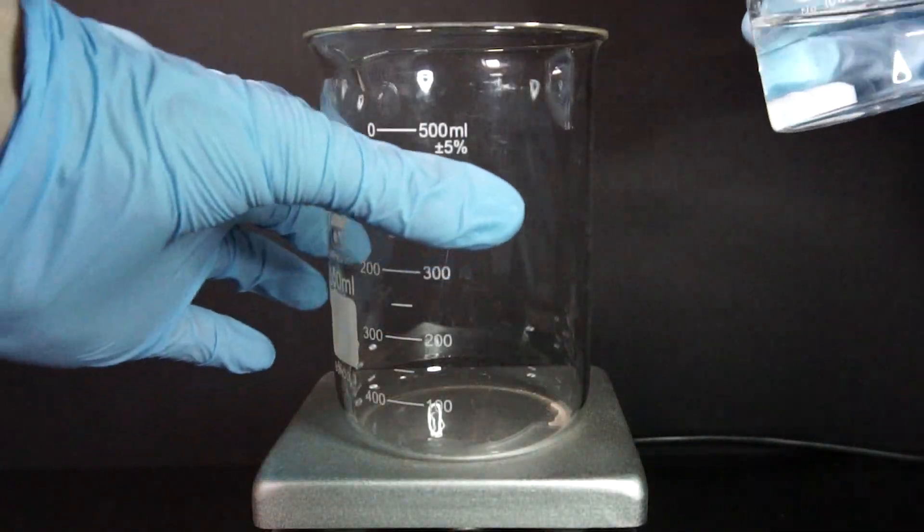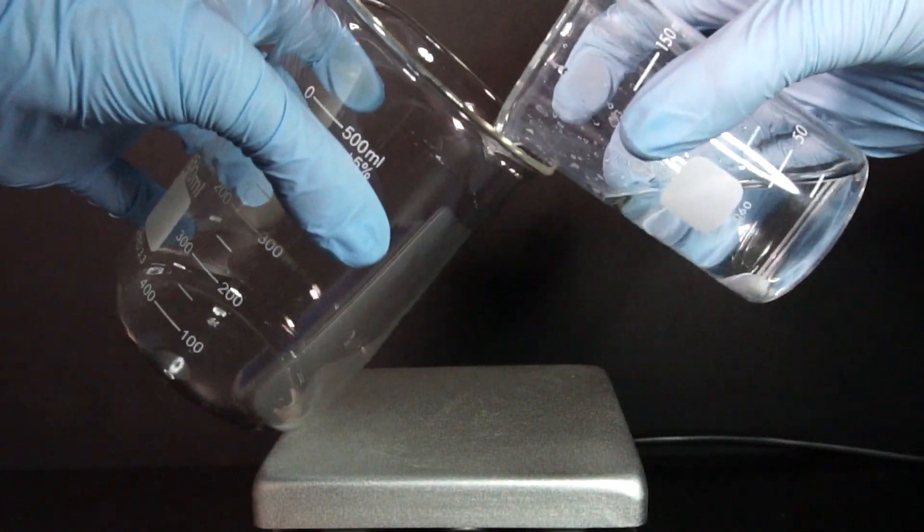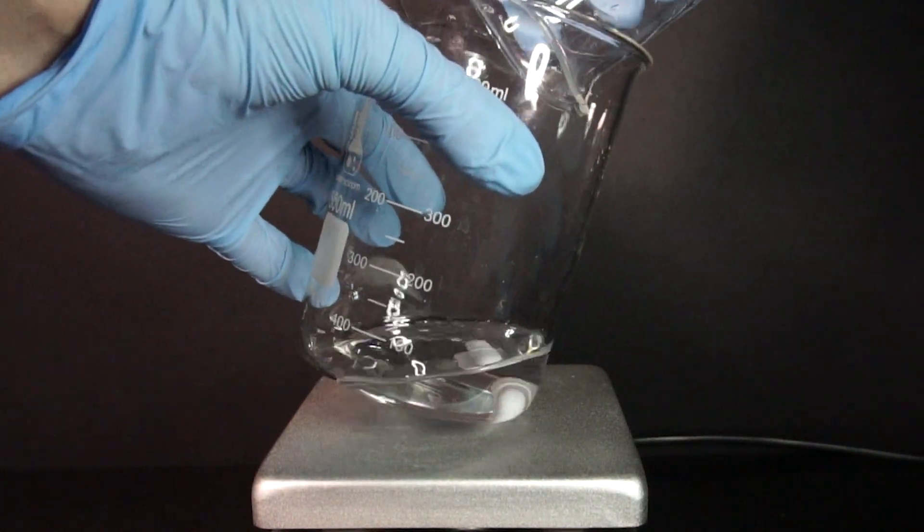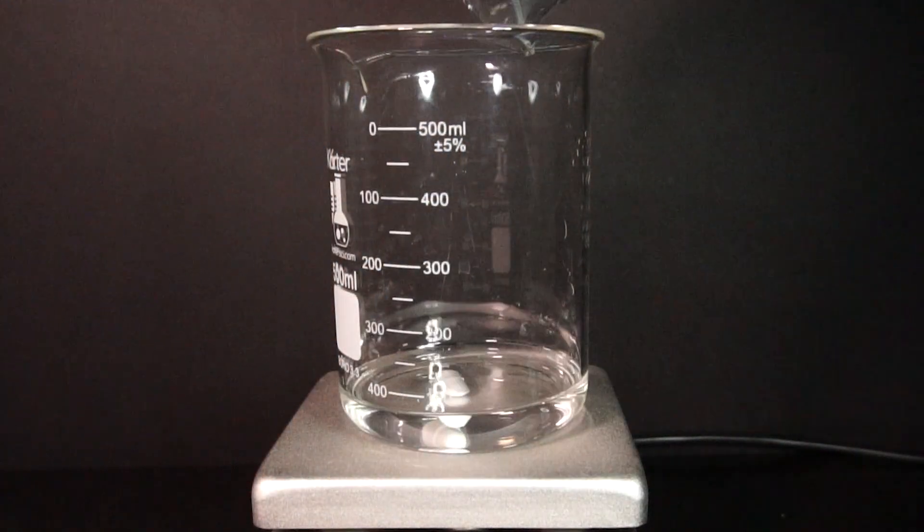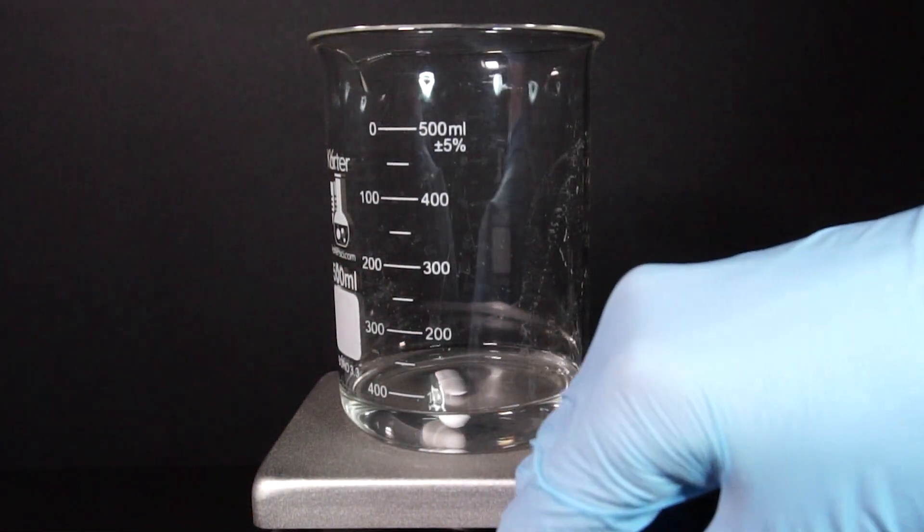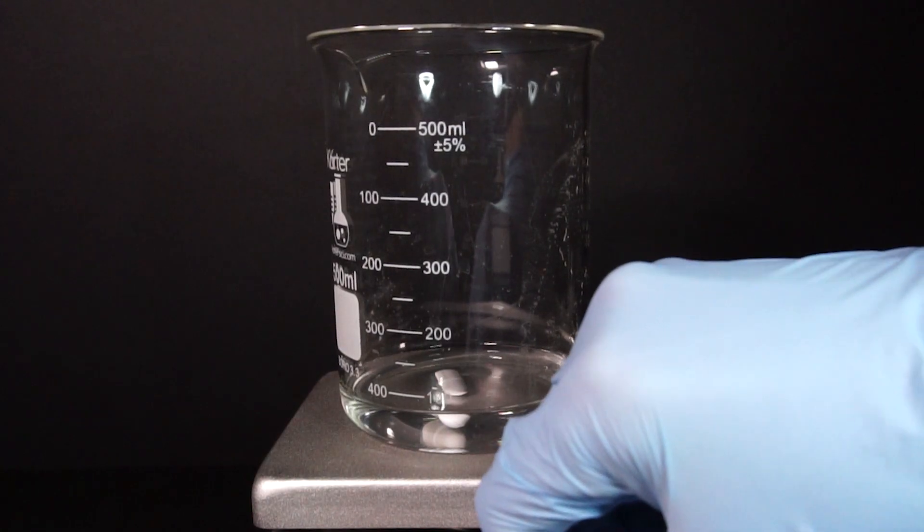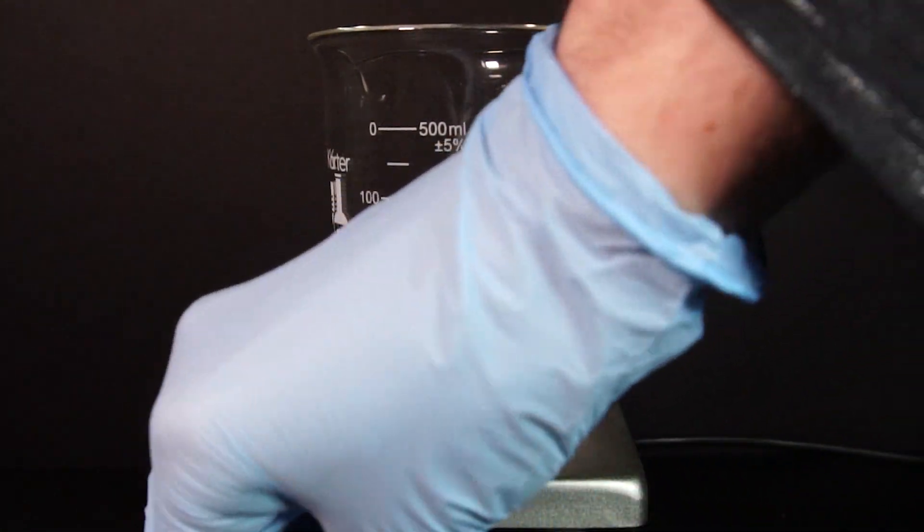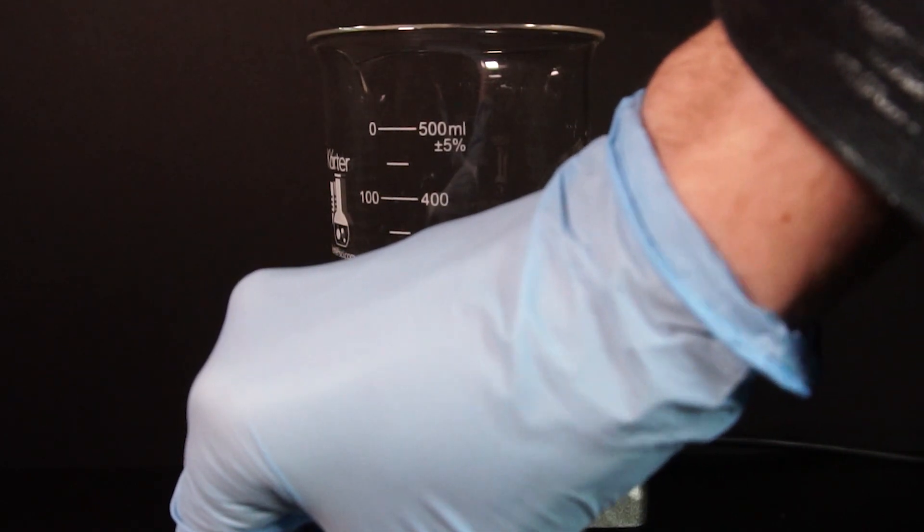From here we will boil off around 60% of the total mixture. I am doing this in a larger beaker with a huge box fan to the side and plenty of ventilation. Boiling off hydrochloric acid and ammonia is extremely toxic and could kill you. I turn on my hot plate and my stir bar and boil the mixture for around 45 minutes.